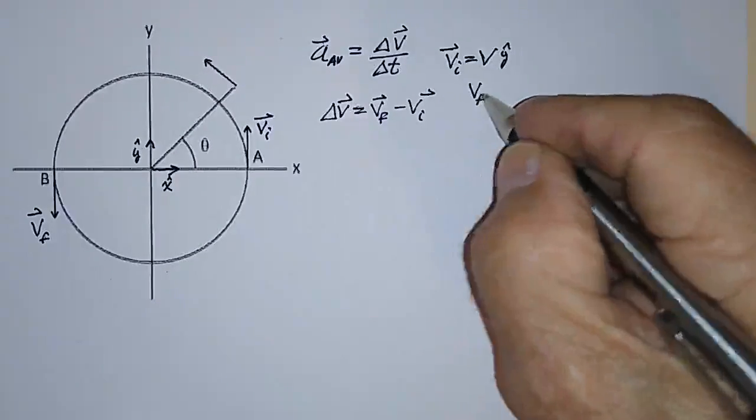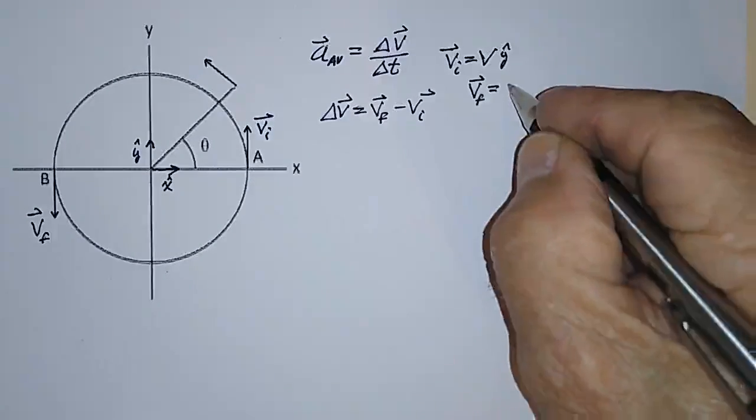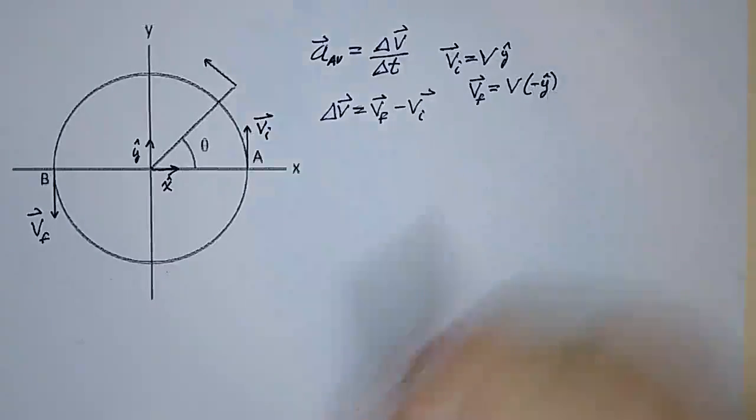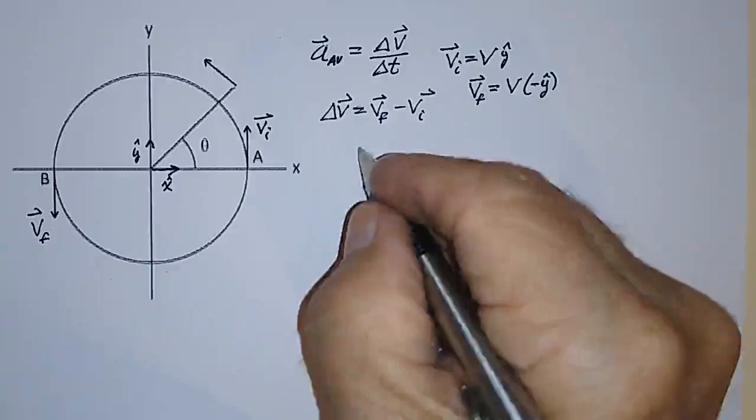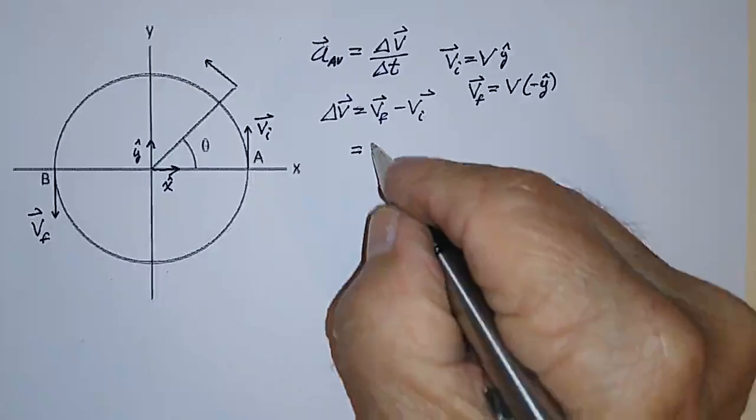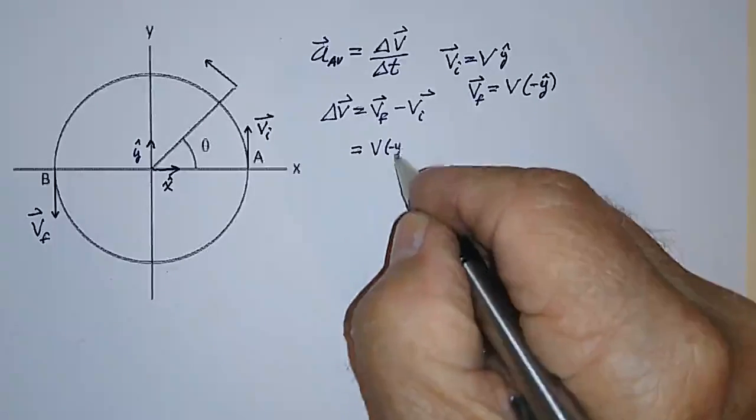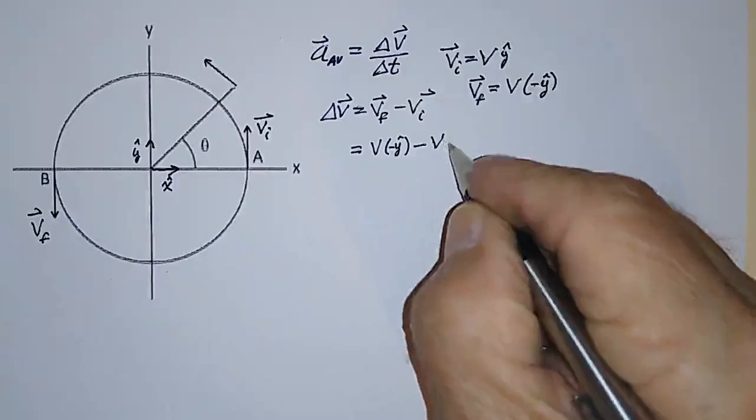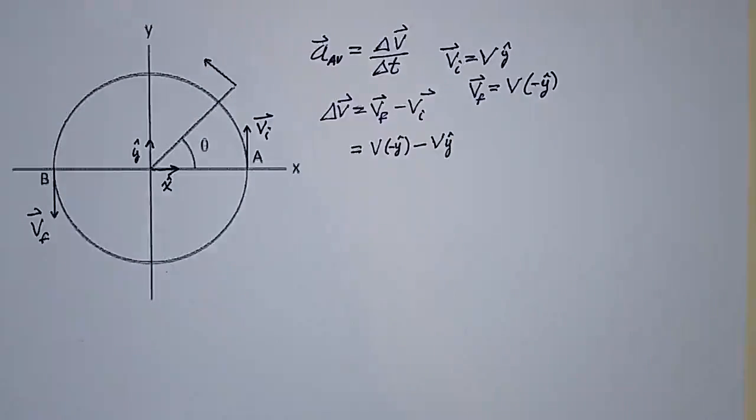V final, on the other hand, is equal to V in the minus Y hat direction. So delta V then, is equal to V final, which is V in the minus Y hat direction, minus V in the plus Y hat direction.